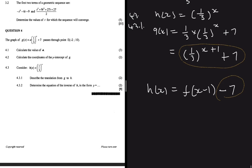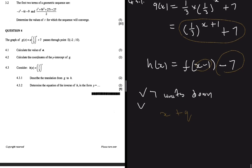Now we have g as close to h as possible, and we can describe the translation: g(x) = h(x-1) - 7. The minus 7 tells us g was moved 7 units down. And because we have x minus 1 — remembering that x + q moves the graph left when q is positive, and right when q is negative — x - 1 means the graph was moved one unit to the right.